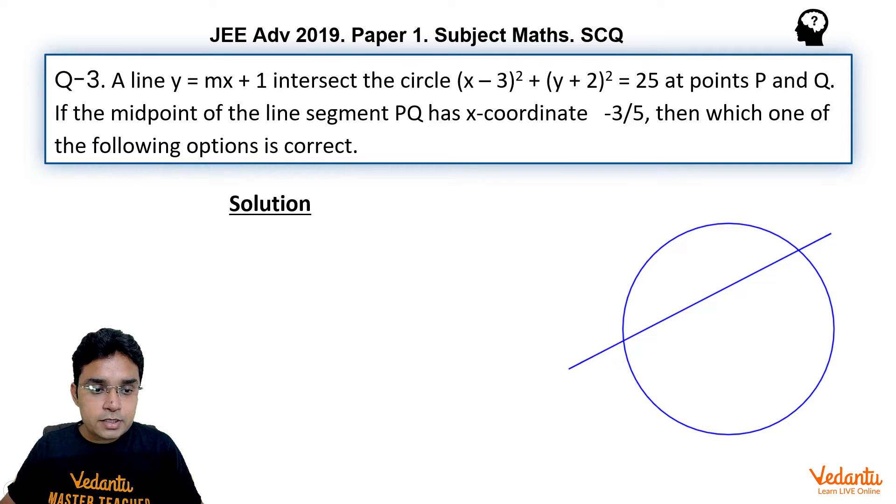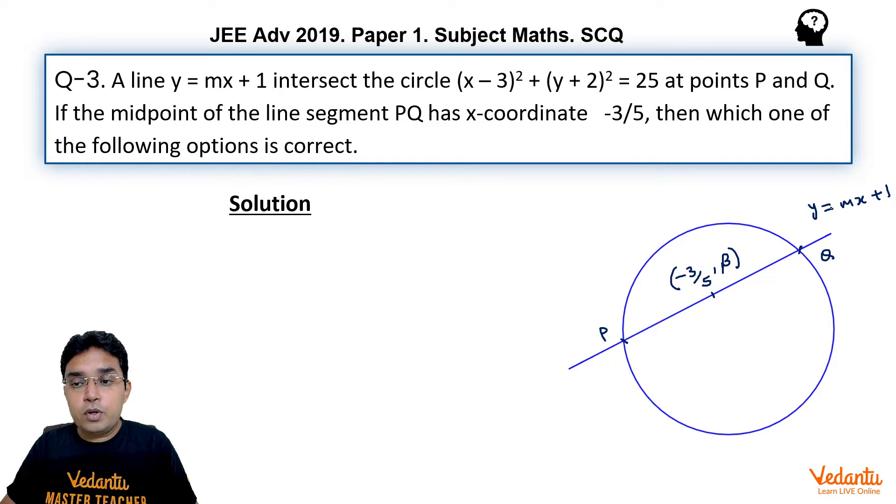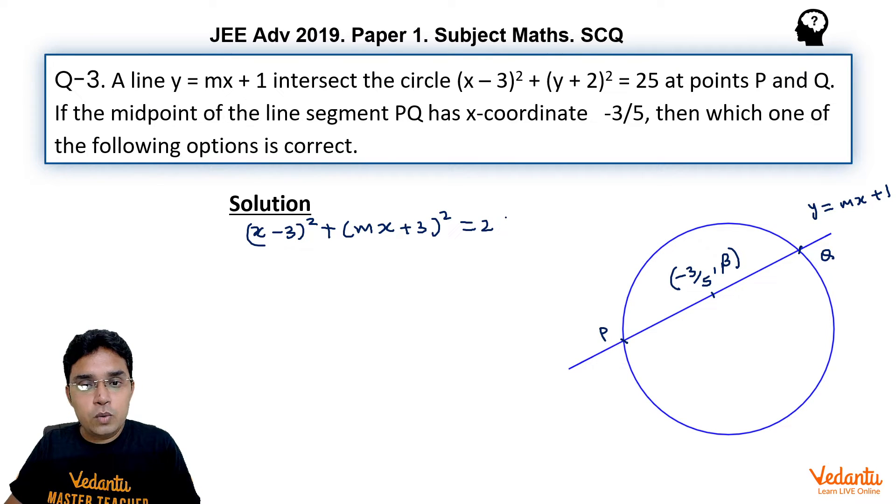Let us assume this is the circle and this line y equals mx plus 1 is intersecting the circle at P and Q, and the midpoint has x-coordinate minus 3 upon 5 and let us say y-coordinate is beta. Now, one of the methods could be that you put this y equals mx plus 1 in the equation of circle. We get (x minus 3)² plus (mx plus 1 plus 2)², so (mx plus 3)² equals 25.